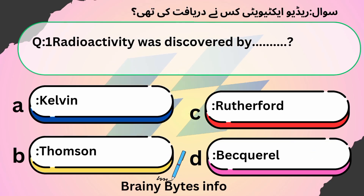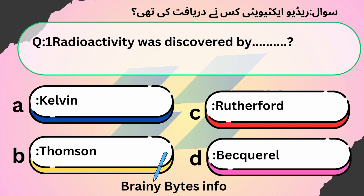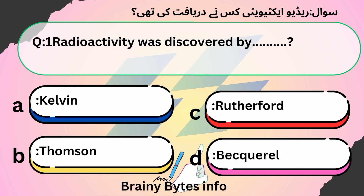Radioactivity was discovered by: A. Kelvin, B. Thompson, C. Rutherford, D. Becquerel. Answer: D. Becquerel.